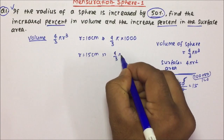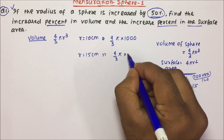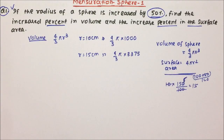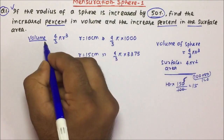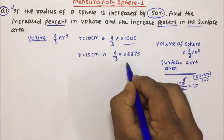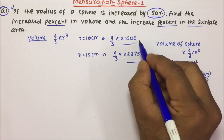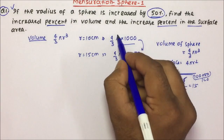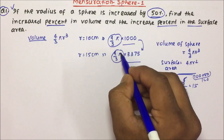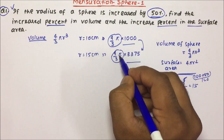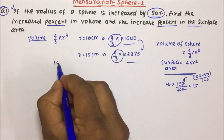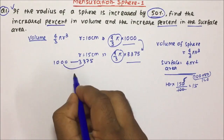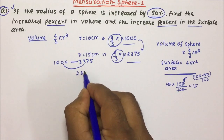So it will become 15 now. What will be the volume? 4/3 π into 15³. Friends, 15³ is nothing but 3375. Now earlier the volume was 1000 and now the volume is 3375. Let's calculate what is the increment in the volume. Friends, 4/3 π is the same in both, so we can ignore it. From 1000 the volume is increasing to 3375, so the increment is 2375.